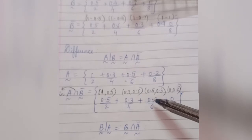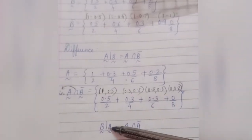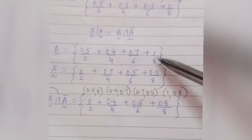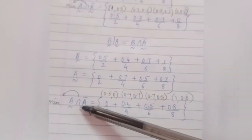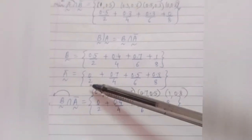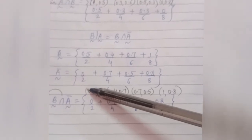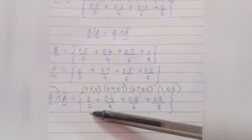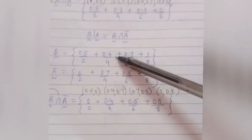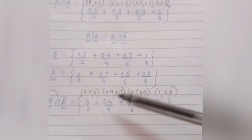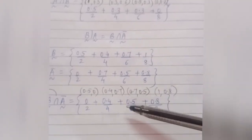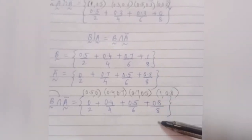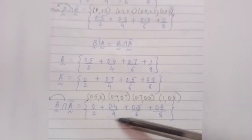Now let's calculate B difference A. Apply B intersection A complement. Consider set B and set A complement, then select the minimum element from each pair. First element: 0.5 and 0 — minimum is 0 upon 2. Second: 0.4 and 0.7 — minimum is 0.4 upon 4. Third: 0.7 and 0.5 — minimum is 0.5. Last element: 1 and 0.8 — minimum is 0.8 upon 8. This is B difference A.